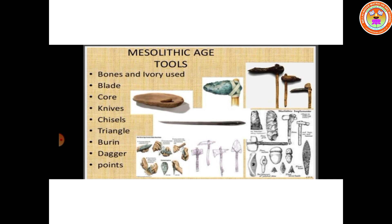Next is the Mesolithic age. Mesolithic age is the age where stone tools had developed due to changes in climatic conditions and food habits. They used sharp stone tools for hunting and started to live in houses. The tools used during the Mesolithic age were made out of bones and ivory. For example: blade, core, knives, shells, triangle, burin, dagger, and points.